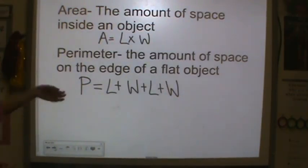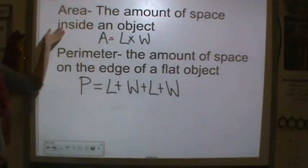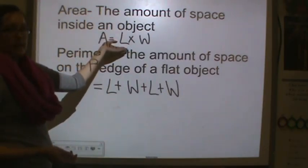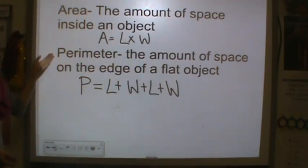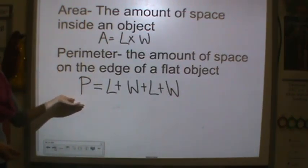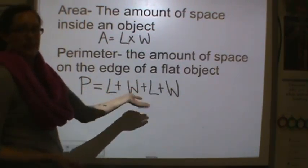Remember, area is the amount of space inside of an object. Area is equal to the length times the width. Perimeter is the amount of space on the edge of a flat object. When we find perimeter, we add the length plus the width plus the length plus the width.